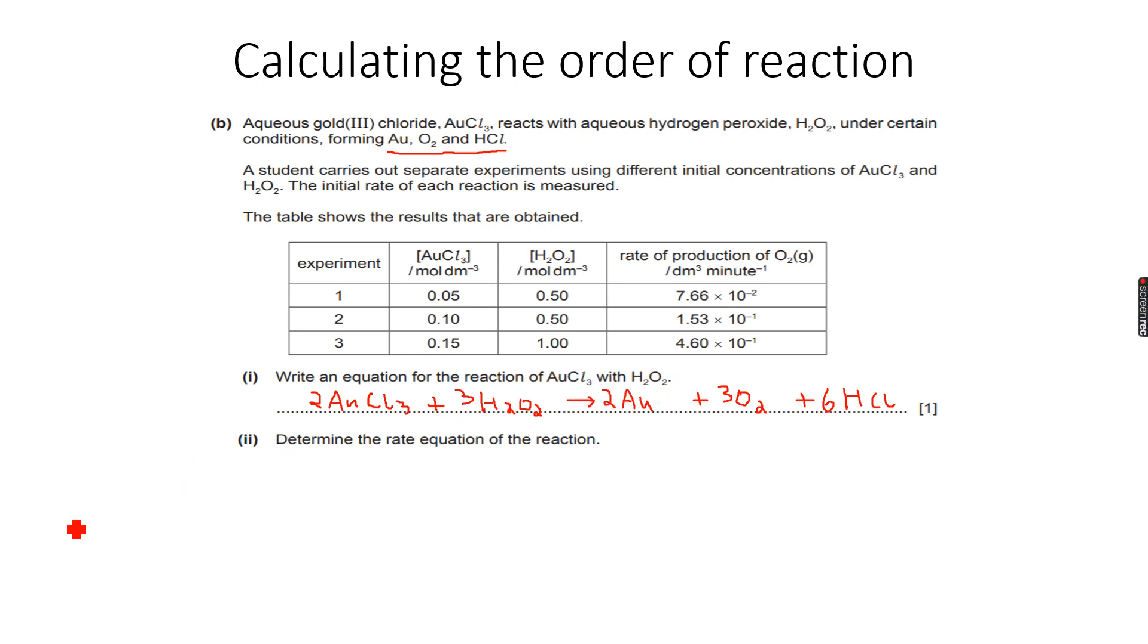Now we have to determine the rate equation of the reaction. Let's write the conventional form. Rate equals a constant times the concentration of AuCl3 raised to the power of M times the concentration of H2O2 raised to the power of N.